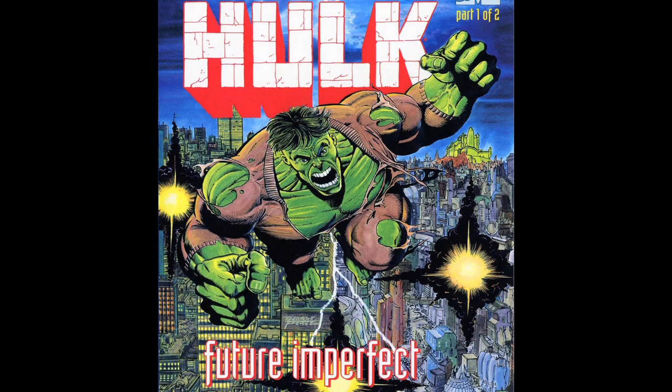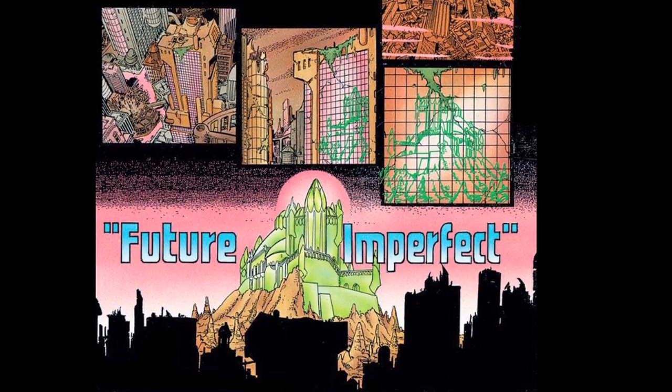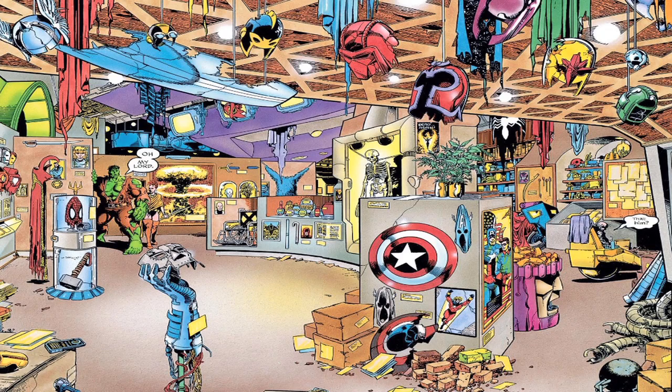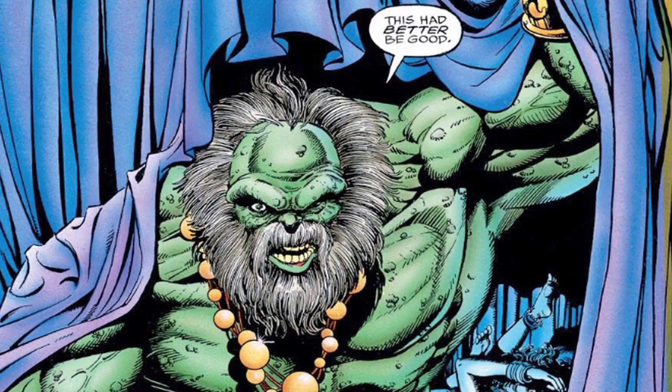In the Incredible Hulk story Future Imperfect, we're shown an alternative future where nuclear war and the resultant radiation have killed off most superhumans. The Hulk becomes the ruler of the world, not because he's the strongest there is, but because he can survive in horribly irradiated areas, proving the age-old saying, if you can't beat him, outlive him.